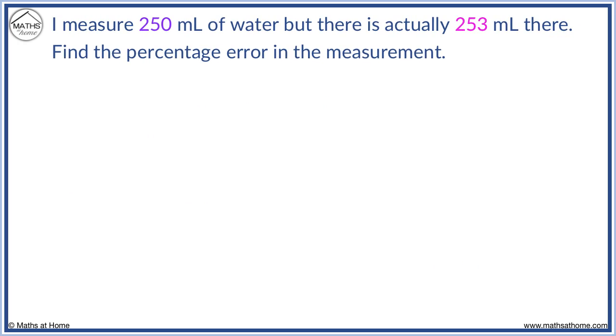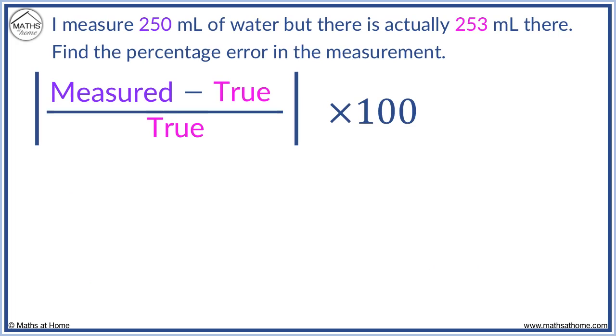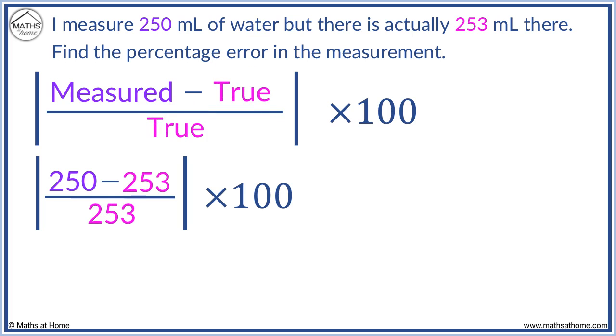Here is another example. We use the formula where the measured value is 250 and the true value is 253. 250 minus 253 equals minus 3.